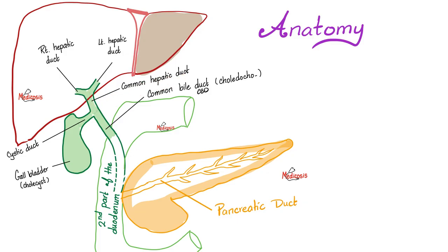The common hepatic duct combines with the cystic duct, which is the duct of the gallbladder. When the cystic duct joins the common hepatic duct, you have the common bile duct or CBD. This common bile duct meets with the pancreatic duct, and they open together in the duodenum - specifically the postero-medial aspect of the second part of the duodenum of the small intestine.